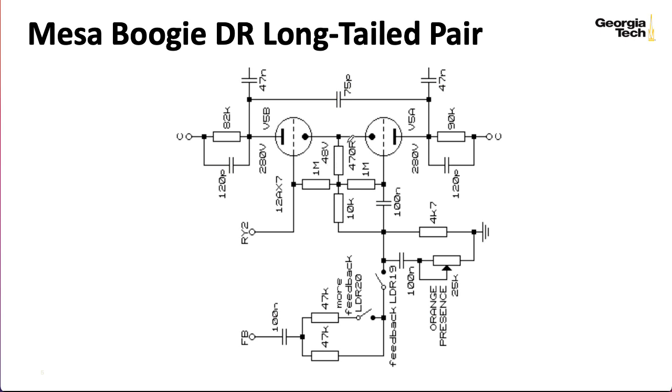All right. So as far as the resistors we need to worry about go, here's RL1, that's 82K. Here's RL2, that's 90K. This 470 ohm resistor is our RK prime. Our grid leak resistors are 1 mega ohm. And this 10K in series with this 4.7K, that's our RT.